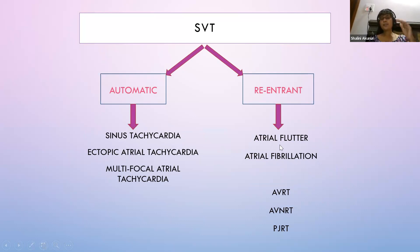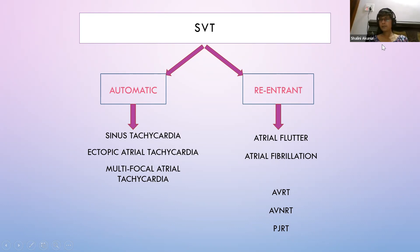Re-entrant tachycardias form a re-entrant circuit that triggers impulses. Examples include atrial flutter and atrial fibrillation at the atrial level. At the AV nodal level, we have AVRT (atrioventricular re-entrant), AVNRT (atrioventricular nodal re-entrant), and paroxysmal junctional re-entrant tachycardia.